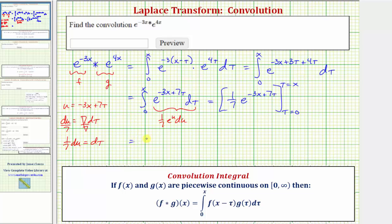So we'd have one-seventh times when tau equals x, we'd have e raised to the power of negative 3x plus 7x. And then when tau equals zero, we'd have minus e raised to the power of negative 3x.